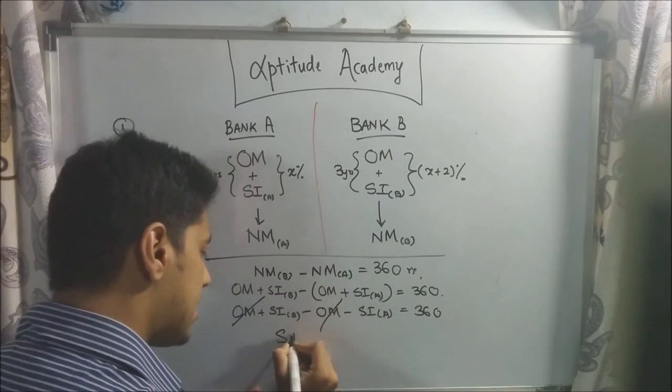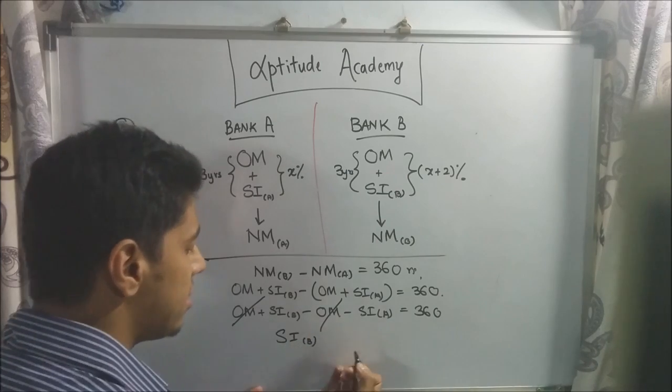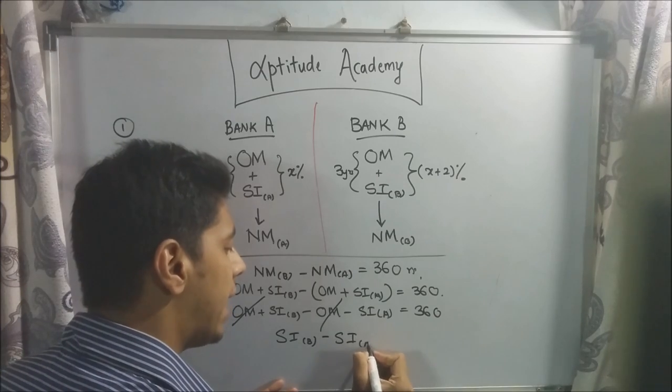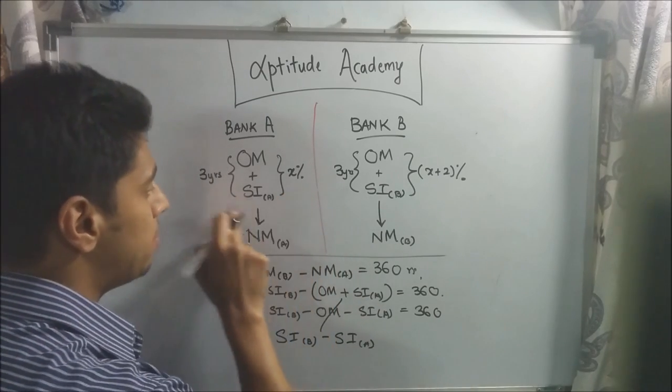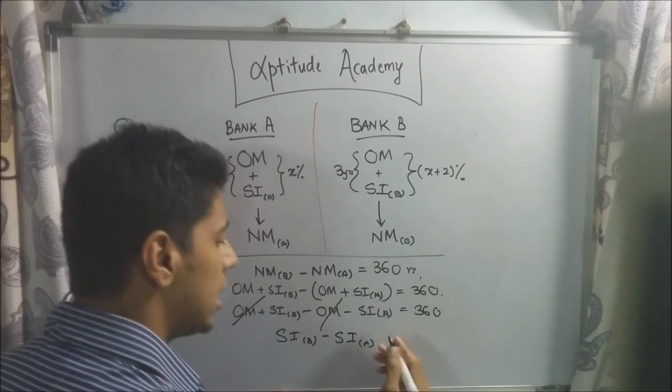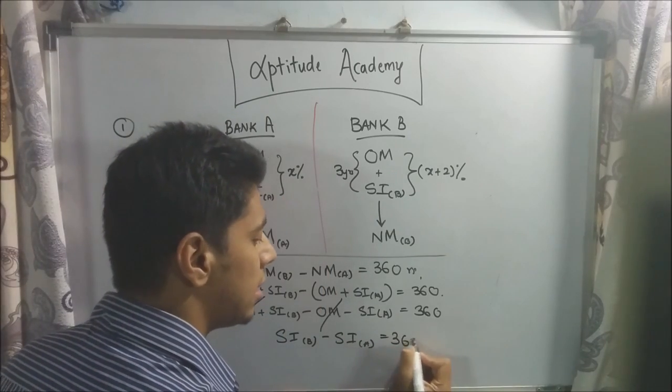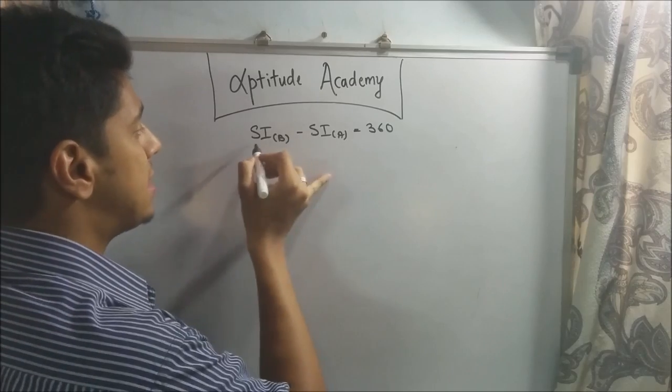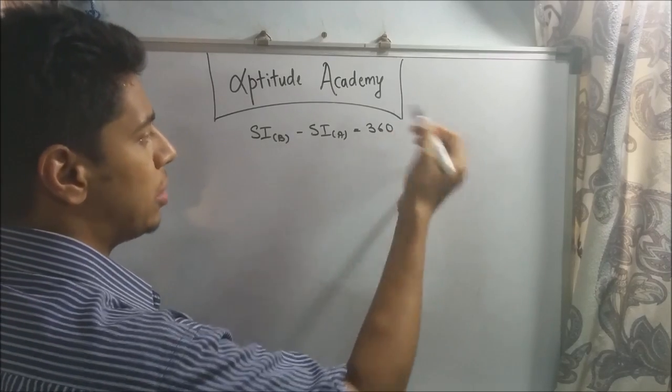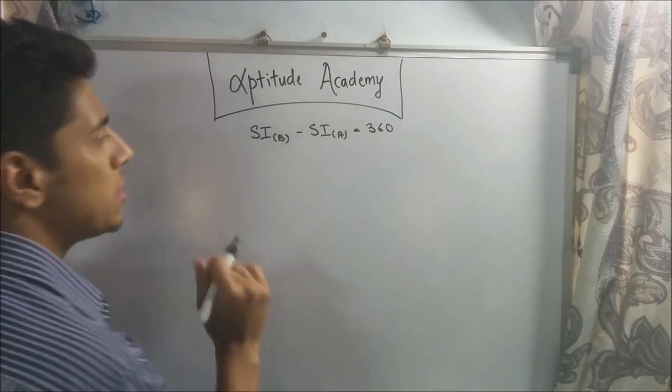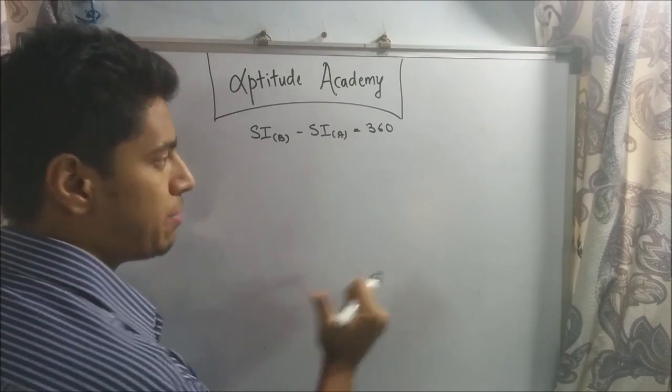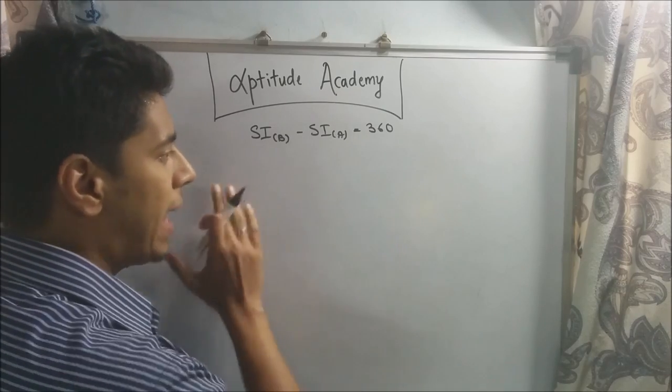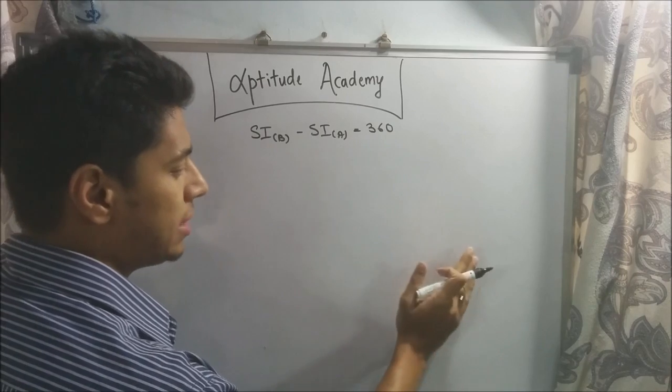So you basically have SI of B—that's simple interest you got from bank B at X plus 2 percent—minus simple interest from bank A, the simple interest you got from bank A at X percent, equals 360 rupees. Now, we just need to solve this equation. SI B minus SI A equals 360. Now, what is different from both the banks? The money put in was same, the principal was the same, the time was same, three years, only the rate was different. For bank A, it was X percent and for bank B, it was X plus 2 percent.